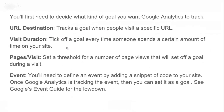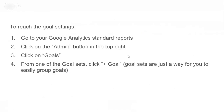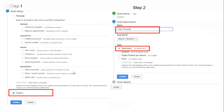Your goal can be a certain visit duration or a certain number of pages per visit. Or if your goal is to make users click on a certain ad or promotion that you've set up, then you need to define an event by adding a snippet of code to your site. To set these up, you go to Admin and then Goals.